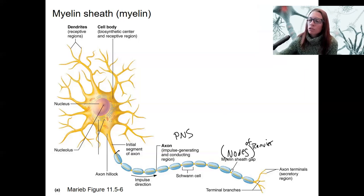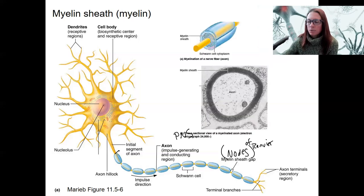Let's look at a cross-section of what's happening here. So this again is the peripheral nervous system. In the CNS, it would be oligodendrocytes that do something similar.